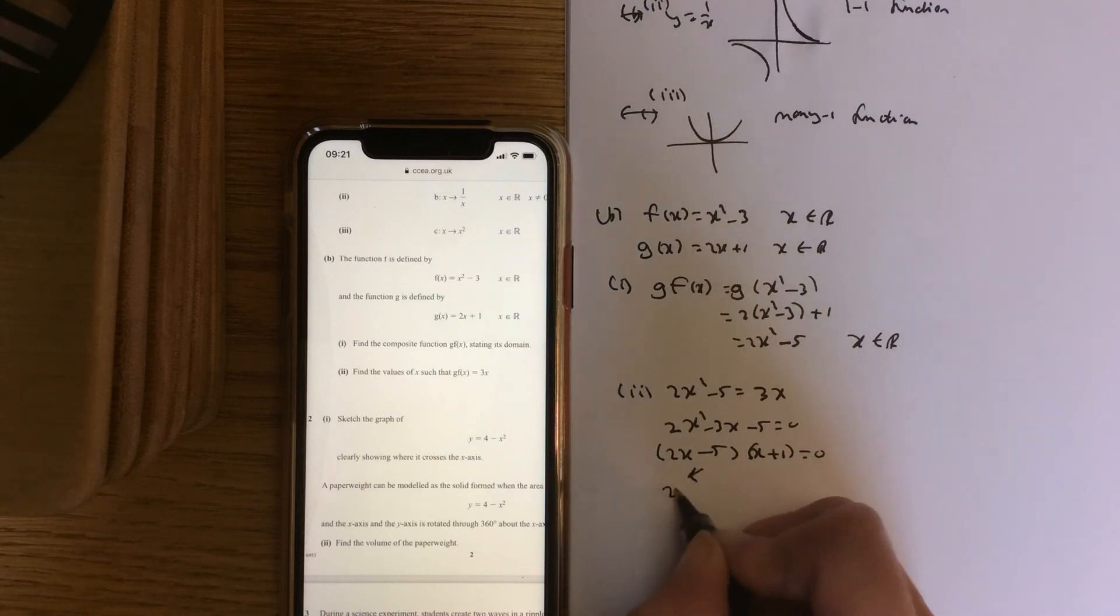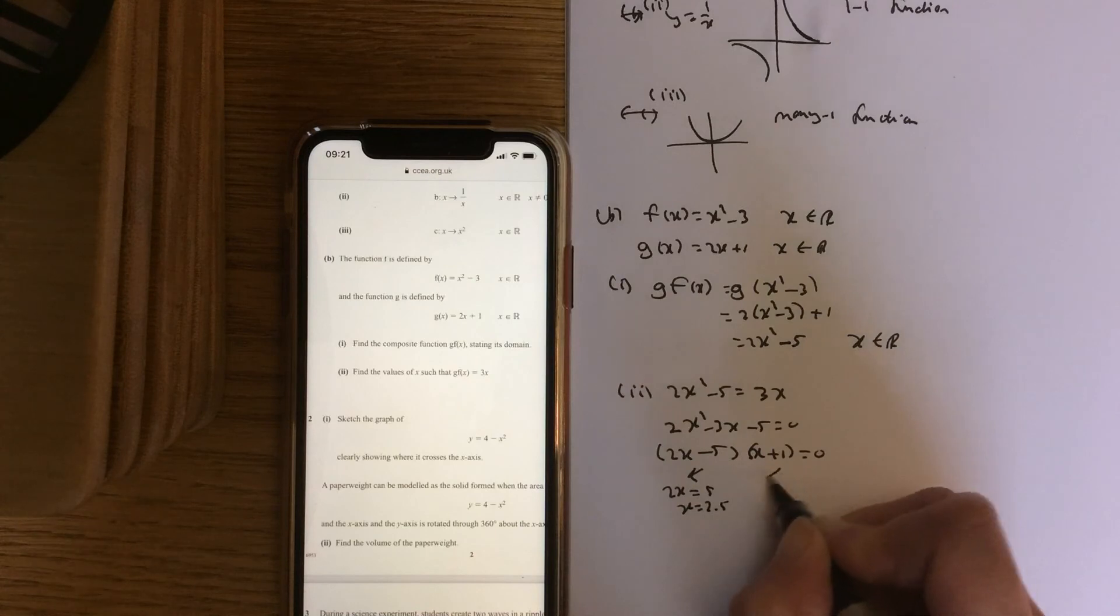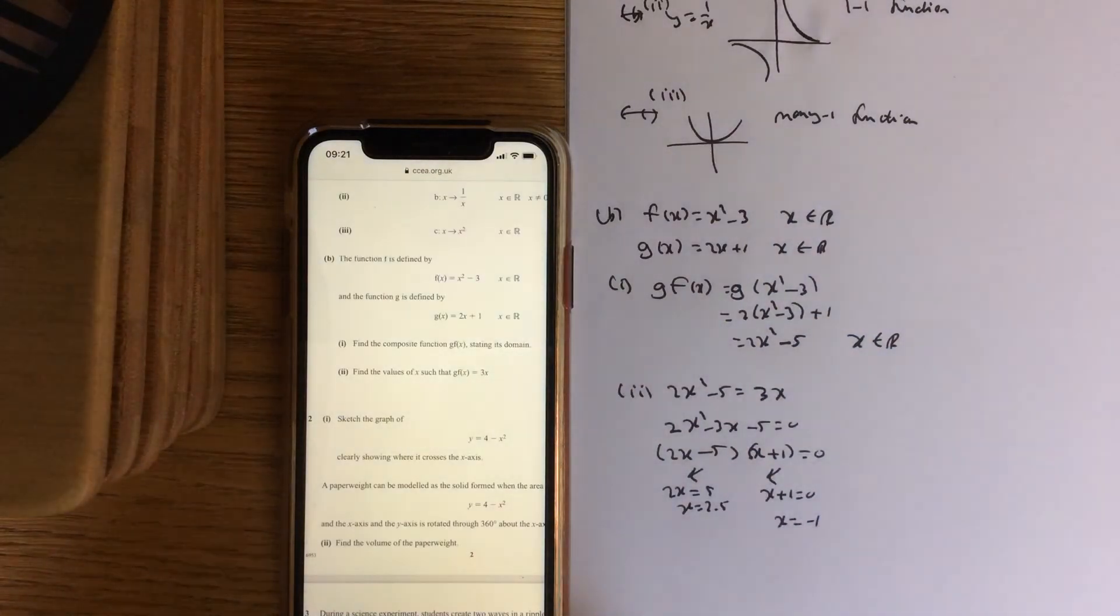So put the first bracket equal to 0. So 2x equals 5, x equals 5 over 2, 2 and a half. So x add 1 equals 0, x equals minus 1.